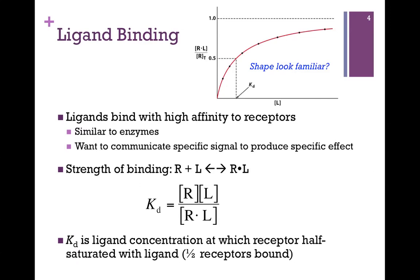Let's look at a ligand binding curve — hopefully this shape looks pretty familiar. It's important to recognize that the ligand binds with very high affinity to its receptors, in a similar way that enzymes are very specific for substrates. We want to communicate a very specific signal with a specific effect, so that interaction must be with high affinity. If we look at an equilibrium of our receptor binding its ligand and the receptor-ligand complex, we can set up a simple dissociation constant. Plotting the fraction of receptors bound to ligand as a function of ligand concentration gives us this type of curve.